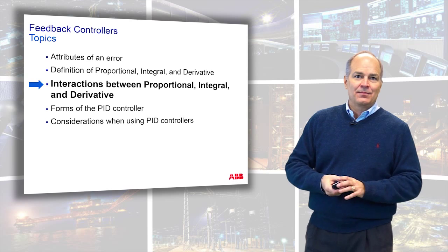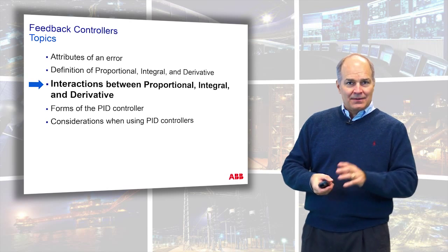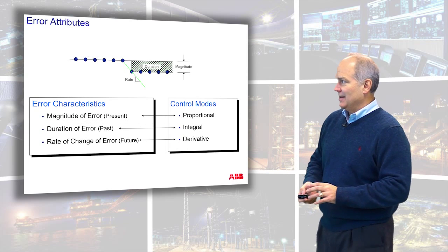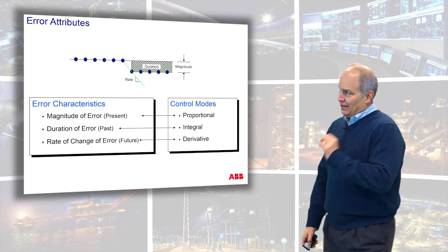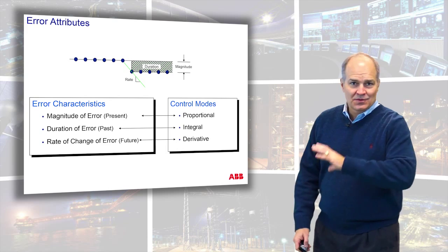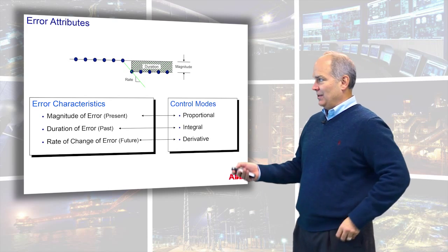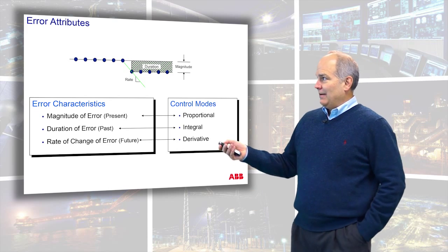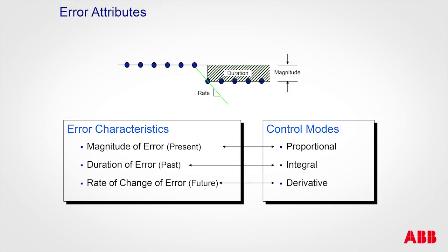That workhorse represents ninety to ninety-five percent of all automation in industrial systems today. This is a quick review to show the attributes: you have a set point and the measured value moves away from it - from a disturbance or a load change. There are three things: magnitude of error, representing the present error; and duration of the error, representing the past error.